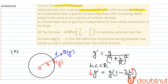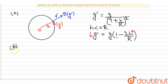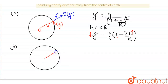Now coming to the second part: does acceleration due to gravity increase or decrease with increasing depth? For the second part, I am drawing the Earth of radius capital R. Here A is the point on the surface of the Earth where acceleration due to gravity is g. And at a particular depth, I am marking point B inside the sphere.